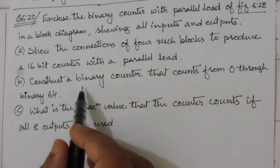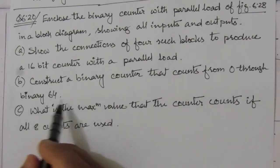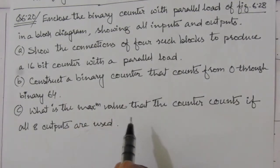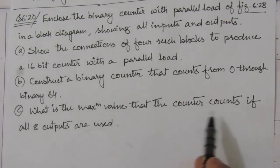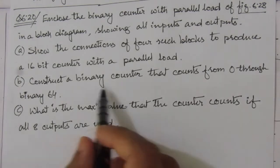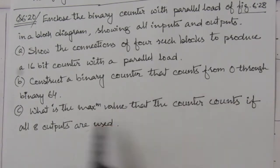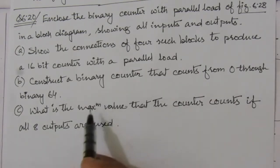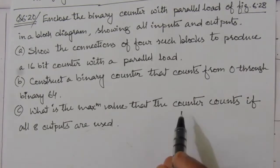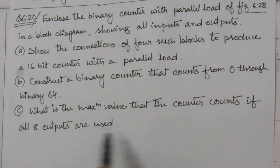Next, we are asked to construct a counter that counts from 0 through binary 64. Then we have to find out what is the maximum value the counter counts if all 8 outputs are used. In the second case we use two parallel 4-bit counters, and in the third part, if we use all 8 outputs of that design, what is the maximum count value?